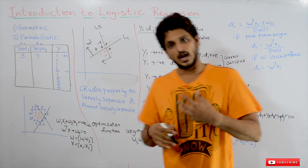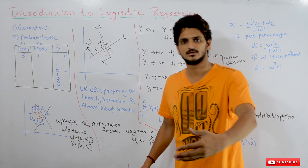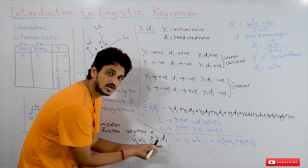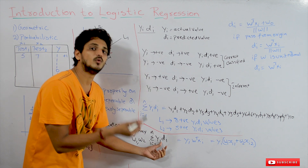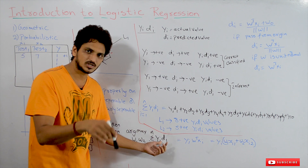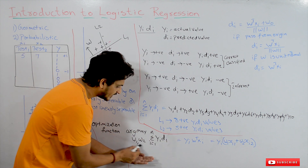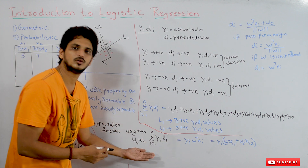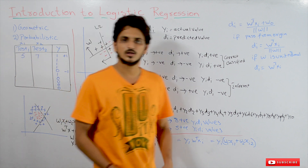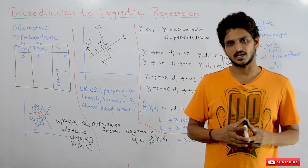In our next class, we will discuss a disadvantage that arises because we are calculating distance, and how to solve that disadvantage. After that, we will discuss how to solve the optimization equation and identify w1 and w2 values. Hope you understand the concept. If you have any questions, please post them in the comment section below. Thanks for watching.